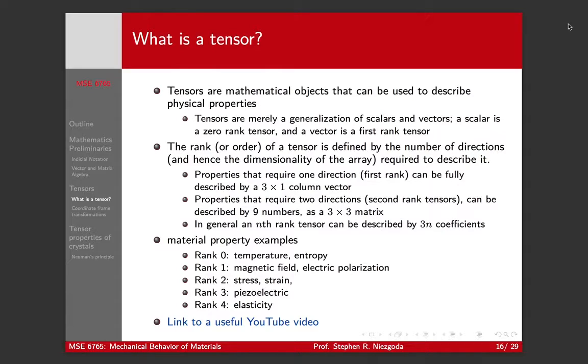We can call the number of directions you need to describe a property the rank of a tensor. So a scalar is a rank 0 tensor, a vector is a first rank tensor, and something that you need two directions to describe would be a second rank tensor.